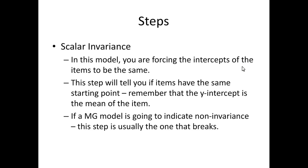In the scalar model, we're forcing the intercepts to be the same — the average score for each question. In my experience, this is usually where things break down. If something's going to be non-equivalent between groups, it's often the average score, because people just start in different places. So maybe some participants are more likely to score lower on an item while others score higher. Generally, scalar is the step where it breaks down.